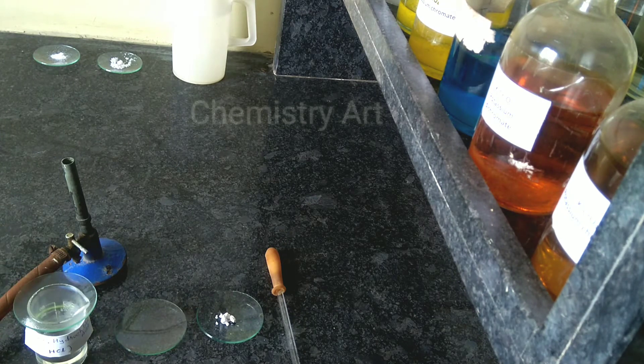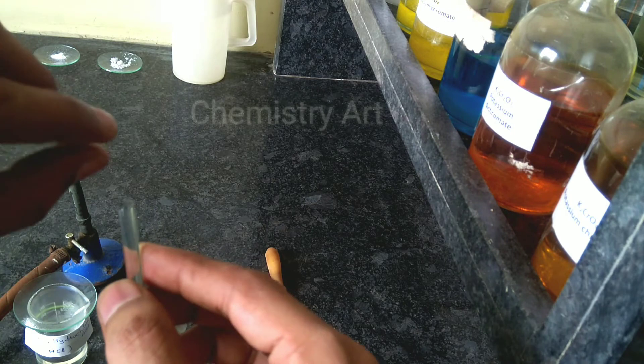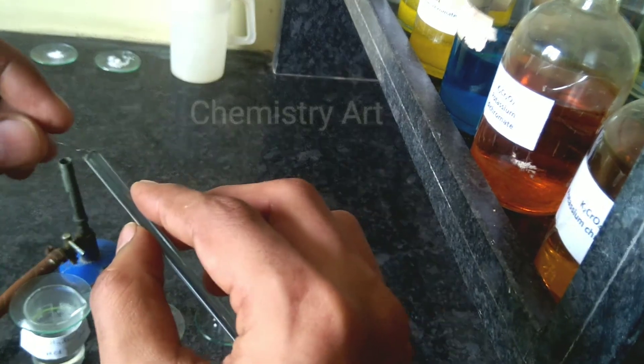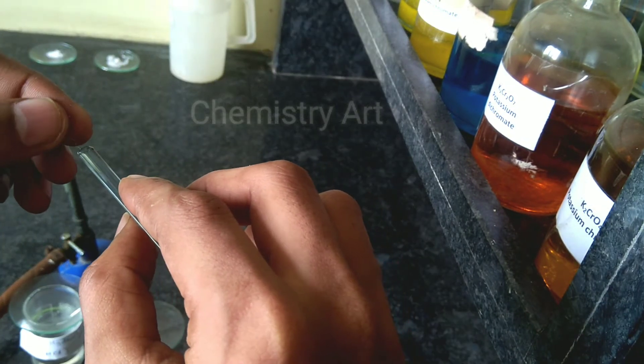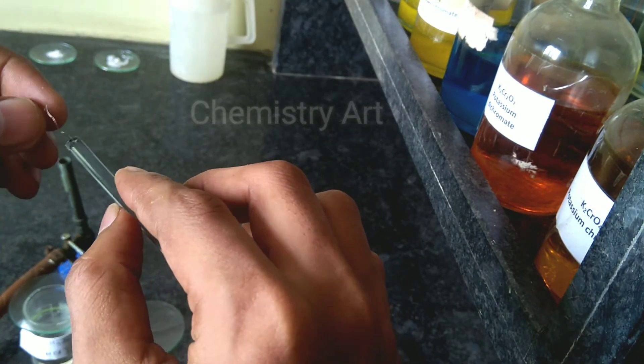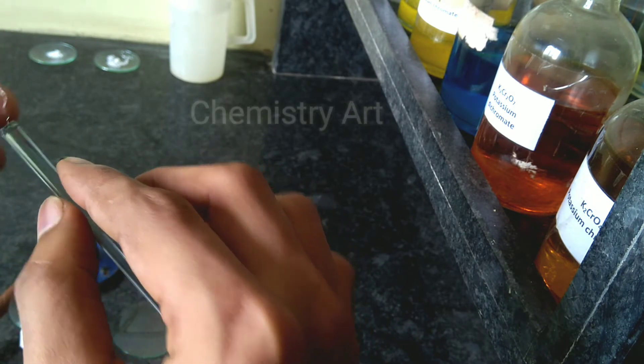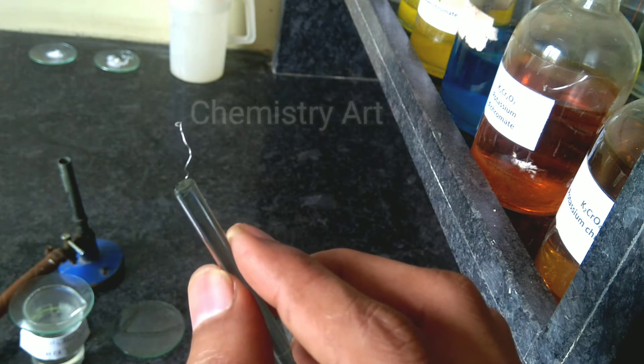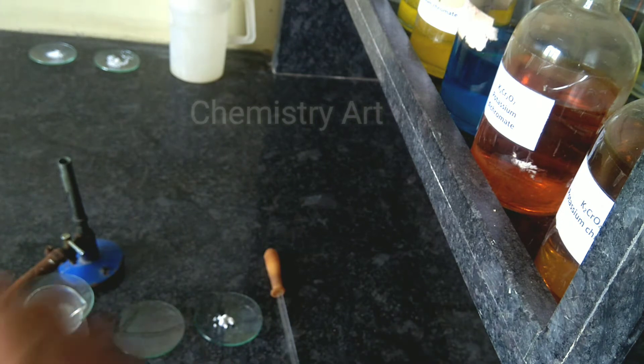You have to make a small loop on the end of the platinum wire so that you can take the mixture of hydrochloric acid and salt in it, and then that loop we have to heat in the oxidizing flame of the burner. Here you can see the loop is prepared.